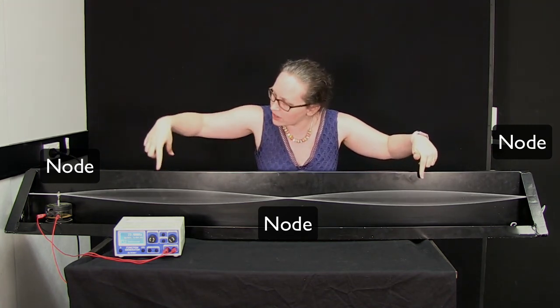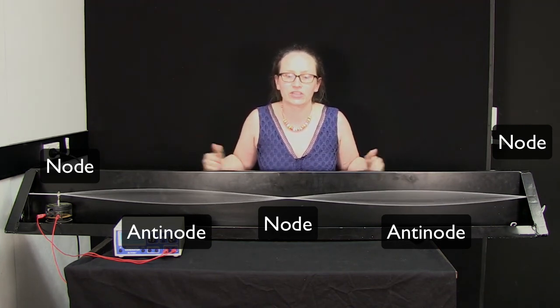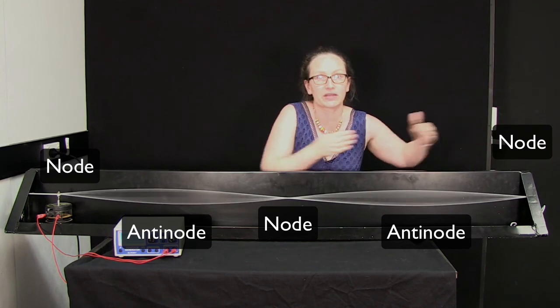The places with the largest movement are known as the anti-nodes, and they occur halfway between the nodes.